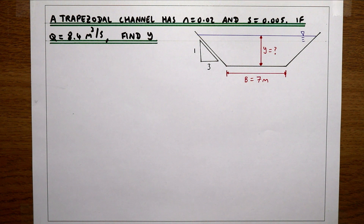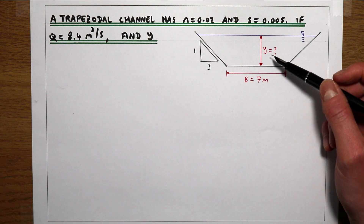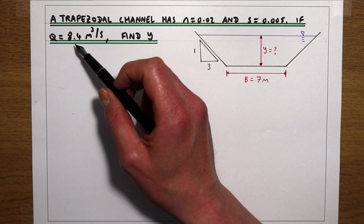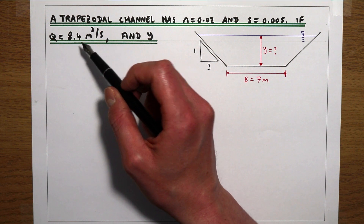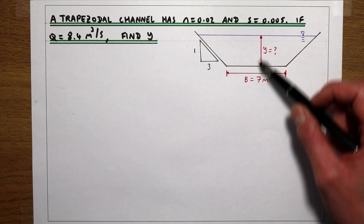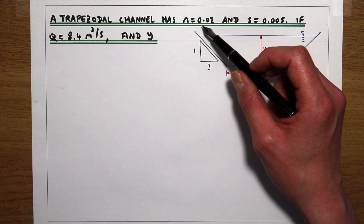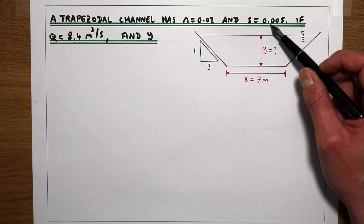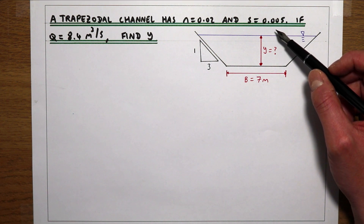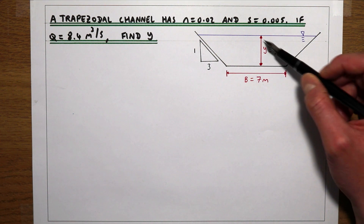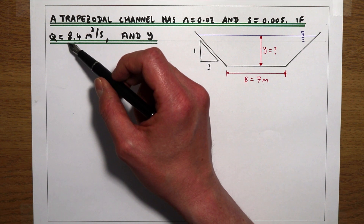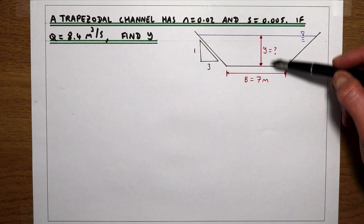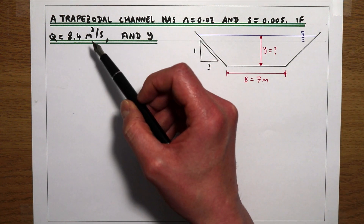In this example we're looking at a trapezoidal channel. We're told that the flow rate in the channel is 8.4 metres cubed per second. We're given the channel dimensions, told that the Manning's n value of the channel is 0.02, the longitudinal slope is 0.005, and what we're trying to do is find the flow depth for the discharge of 8.4 metres cubed per second.